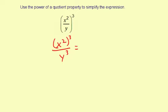So x squared to the third — remember you multiply these powers — giving you x to the sixth over y to the third. And that's your answer.